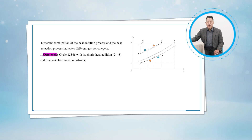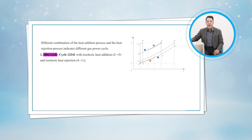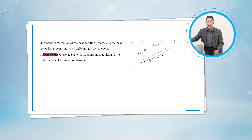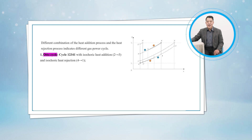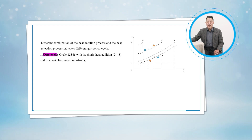The first one: when cycle 1-2-3-4-1 is with isochoric heat addition and isochoric heat rejection, the cycle is the Otto cycle. This means in figure 10-38, state A is merged with state 3 and state B is merged with state 1.